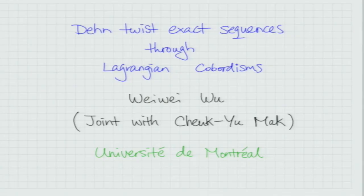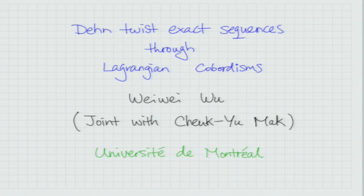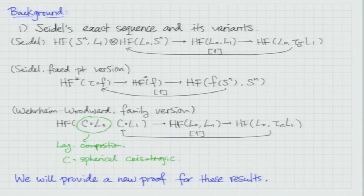Thank you for the invitation, and it's a great pleasure to be here. I'm going to talk about Dehn twists exact sequences using Lagrangian cobordisms, which you've presumably heard about a couple of times this semester. This is joint work with Cheuk-Yu Mak, a grad student at the University of Minnesota. Let me give you some background first.